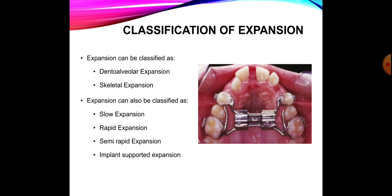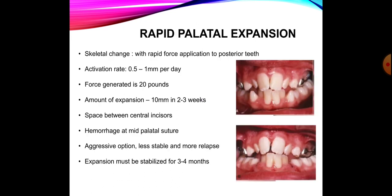In dental alveolar expansion, the alveolar housing and the dentition are moving and contributing to the expansion of the maxilla. In skeletal expansion, the expansion is happening across the mid-palatal suture. We can achieve expansion through various ways: by slowly expanding the palate, by rapidly expanding the palate, or a semi-rapid expansion in between. A fourth category is implant-supported expansion, using implants and skeletal anchorage to achieve expansion.